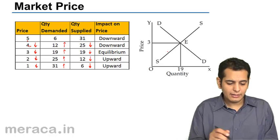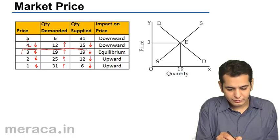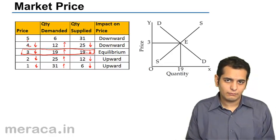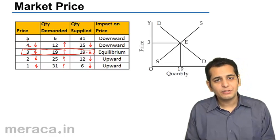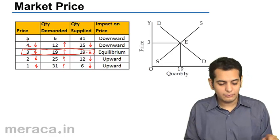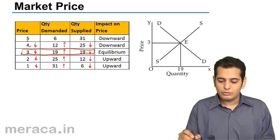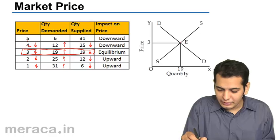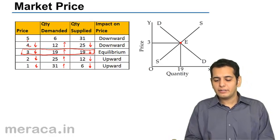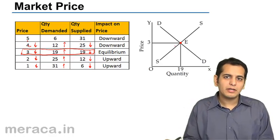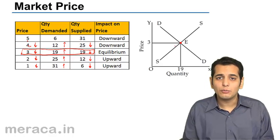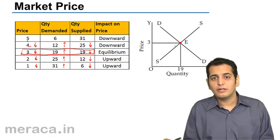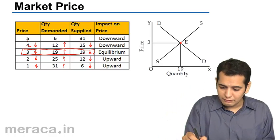In the schedule, there is a point where demand and supply are equal — both are 19. Nineteen units are demanded and 19 units are supplied at a price of 3 rupees. So on the graph, both the demand and supply curves would meet at this point, where the quantity demanded and the quantity supplied are equal. In other words, the demand curve and the supply curve meet there.